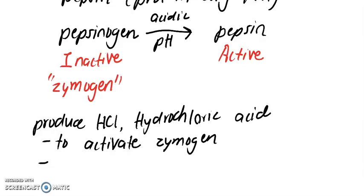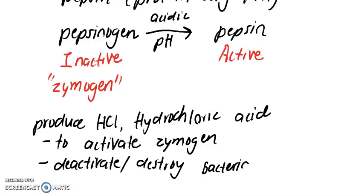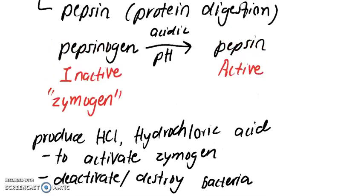This acidic pH will activate your zymogens. It can also deactivate or destroy things like bacteria.